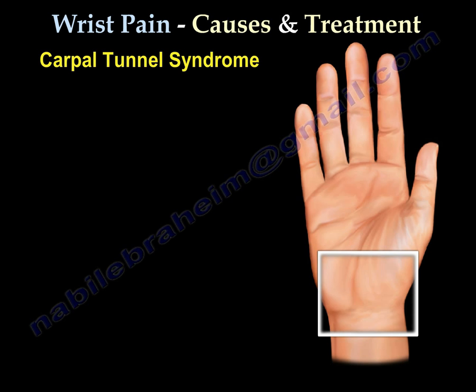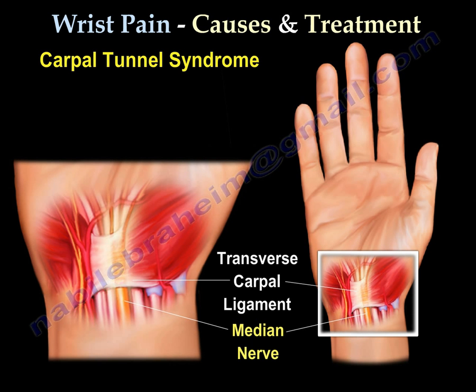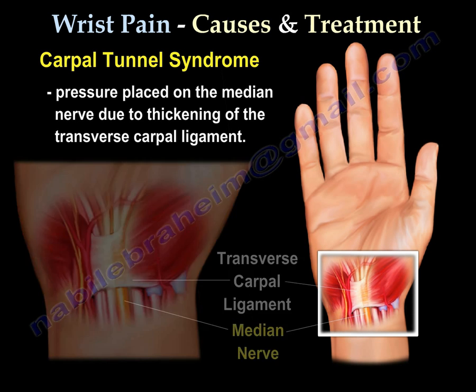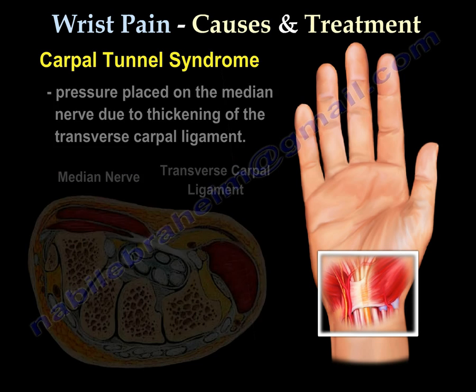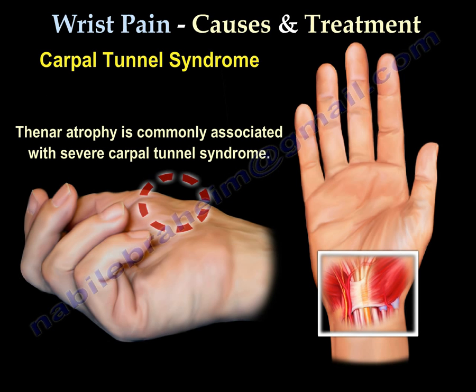Carpal tunnel syndrome is caused by pressure on the median nerve due to thickening of the transverse carpal ligament. As you can see in the picture, the transverse carpal ligament sits above, and the median nerve passes below it. Thenar atrophy is commonly associated with severe carpal tunnel syndrome.